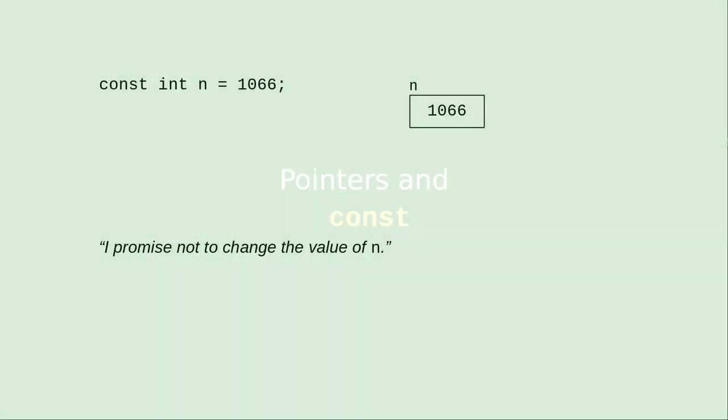We already know about the const specifier for defining constants. This specifier makes a promise that a variable's value won't change. When you say that n is a constant, the compiler will tell you if you break that promise.